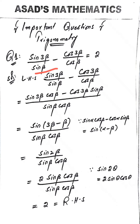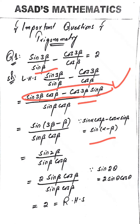Taking the left hand side and taking the LCM, we get: sin 3β into cos β minus cos 3β into sin β, all divided by sin β into cos β. We see that the numerator matches the formula sin α cos β minus cos α sin β, which equals sin(α − β). Applying that formula to the numerator, we get sin(3β − β) divided by sin β into cos β.